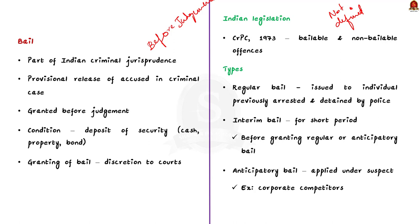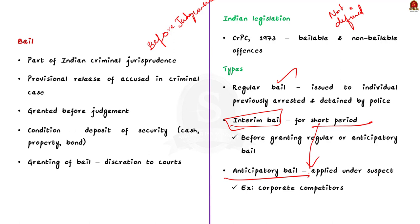The first type is regular bail, frequently issued to any individual who has previously been arrested and detained by police. The accused has the right to be freed from confinement under Section 437 and Section 439 of the CrPC. The second is interim bail — a bail issued for a short period, granted to an accused before the hearing for regular or anticipatory bail. The third type is anticipatory bail: if a person suspects they may be arrested for a non-bailable offence, they may petition for anticipatory bail. This has become an important issue as corporate competitors and other prominent persons sometimes seek to frame opponents with fake charges. It is obtained under Section 438 of the CrPC.